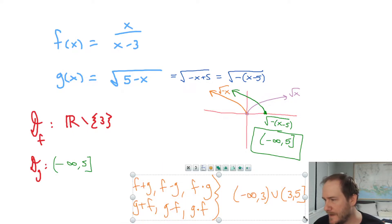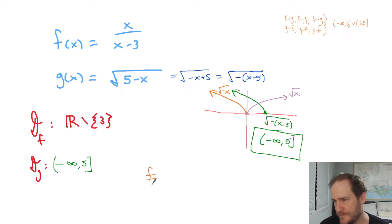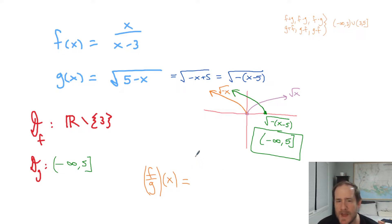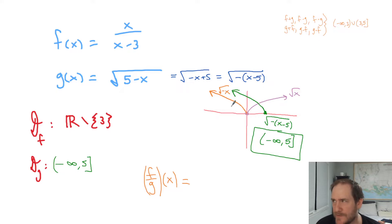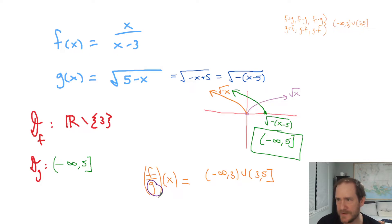The more difficult ones are your quotients. Let's put the radical in the denominator and ask for F over G. The domain is still the intersection — negative infinity to three union three to five — but with a quotient, you have the extra restriction that the denominator function can never equal zero. We know the radical function equals zero when x is five, so that endpoint that used to be included is now excluded.